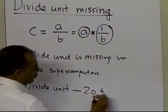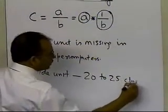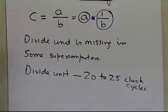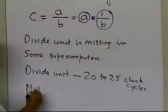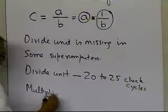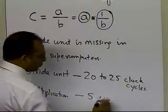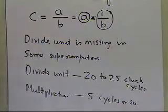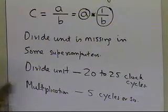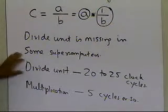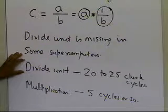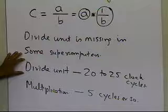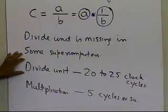It takes about twenty to twenty-five clock cycles on a typical computer to do a division. For a multiplication, it might take about five cycles or so. Addition and subtraction may take two cycles or so. So you are finding out the divide unit is taking the most amount of time, so what they try to do is they try to not have a divide unit, and be able to do the division without having the divide unit.